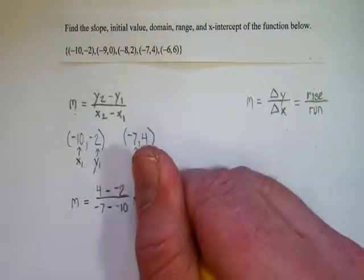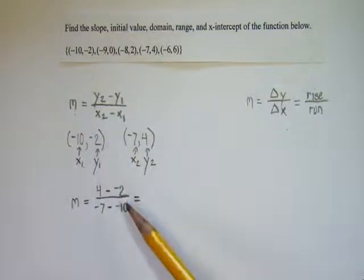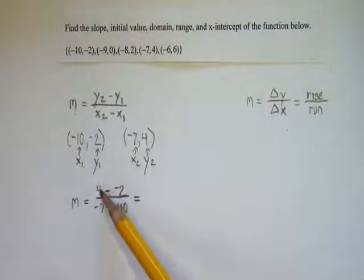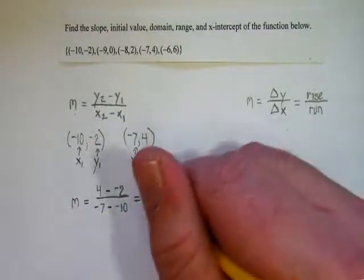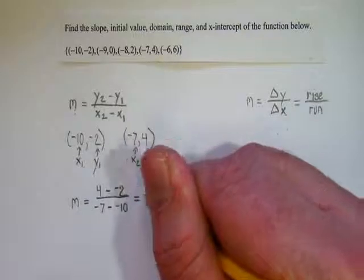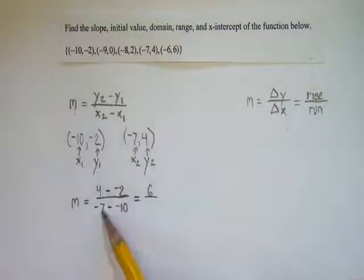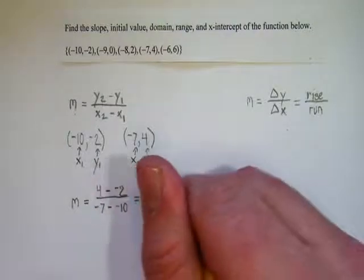And now I just have to calculate this. So you can put this into your calculator. You would put it in exactly as 4 minus negative 2. Or you can recognize that when you subtract the negative, that's the same thing as adding a positive. So 4 minus negative 2 would give me 6 on top. Negative 7 minus negative 10, that's the same thing as negative 7, plus positive 10 would give me 3.